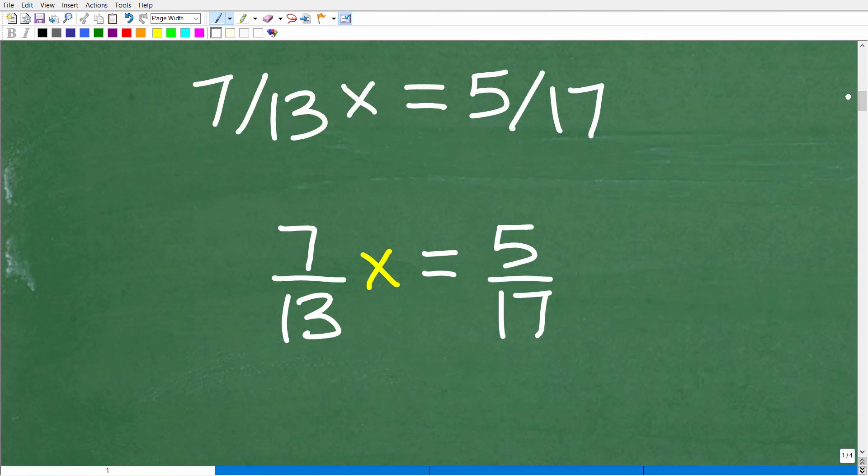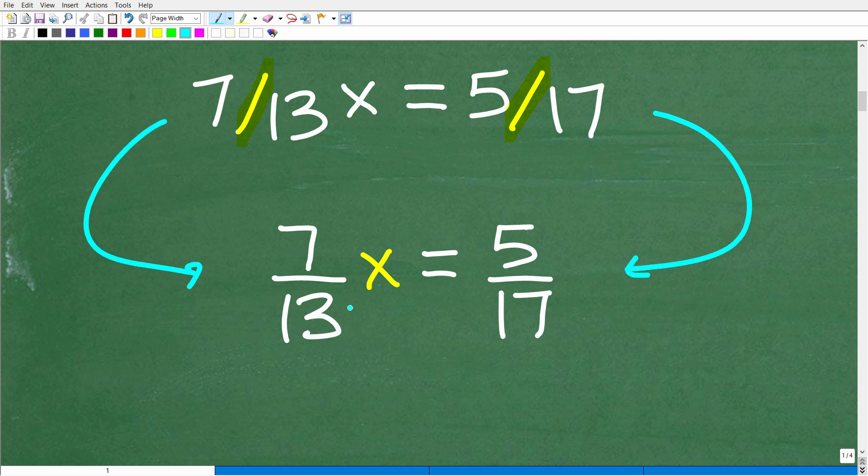Here's our equation. The first thing I want to highlight is these fractions are written with slanted fraction bars. There's nothing wrong if you like stylistically to write your fractions this way. But if you're getting into algebra, you really want to write your fractions with horizontal fraction bars like this. It's just much easier, and everything in algebra are going to have nice horizontal fraction bars. So just get in the habit of writing your fractions with these horizontal fraction bars.